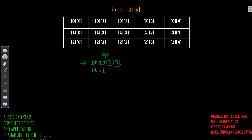For a one dimensional array we took only i as the counter, but here we are taking two counters — that is i and j. That means we have to run two loops.